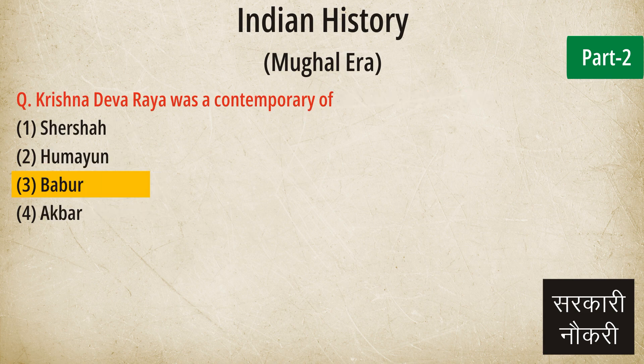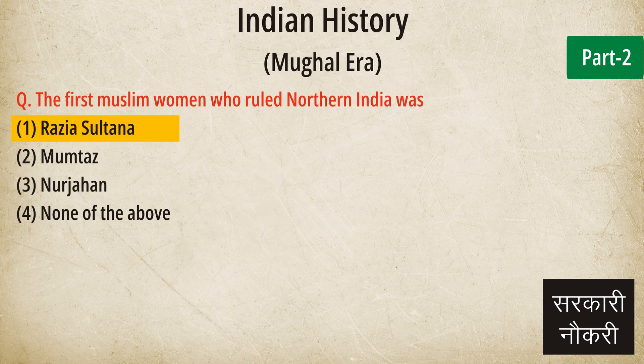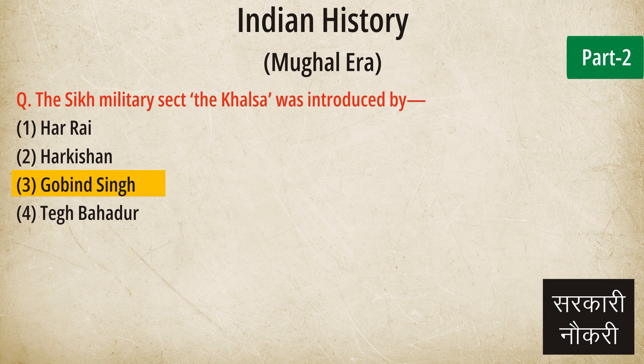Question: Krishna Devaraya was a contemporary of. Answer: Babur. Question: The first Muslim woman who ruled northern India was. Answer: Razia Sultana. Question: The Sikh military sect the Khalsa was introduced by. Answer: Gobind Singh.